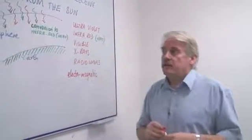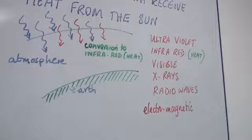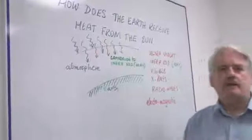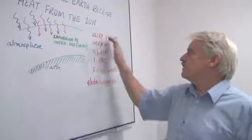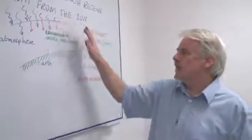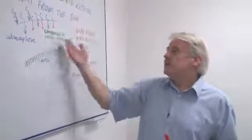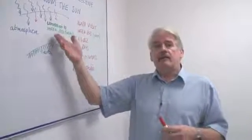Ultraviolet is another radiation, which again is absorbed in the atmosphere. This is the radiation, of course, which gives us a nice suntan or gives us sunburn if we're not careful. But again, that radiation can be absorbed in the atmosphere, giving out infrared at a lower level.